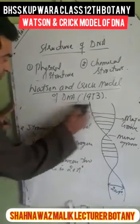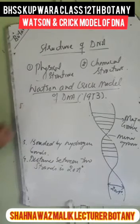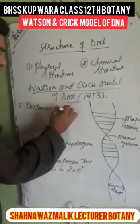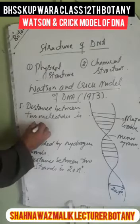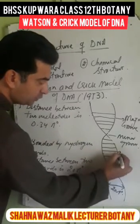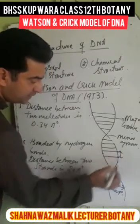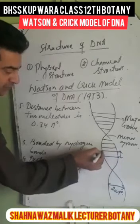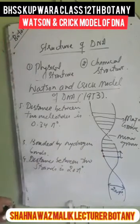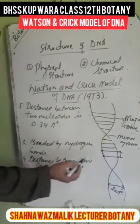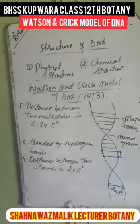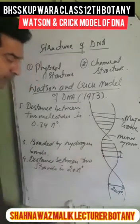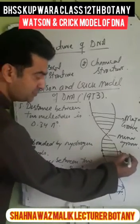Another point given by this model is that the distance between two nucleotides is 3.4 angstrom. So from one nucleotide of one strand to the next, and similarly on the other strand, is 3.4 angstrom. The hydrogen bond is present between a nucleotide of one strand and the nucleotide of the other strand, which we will understand better when we study the chemical structure.